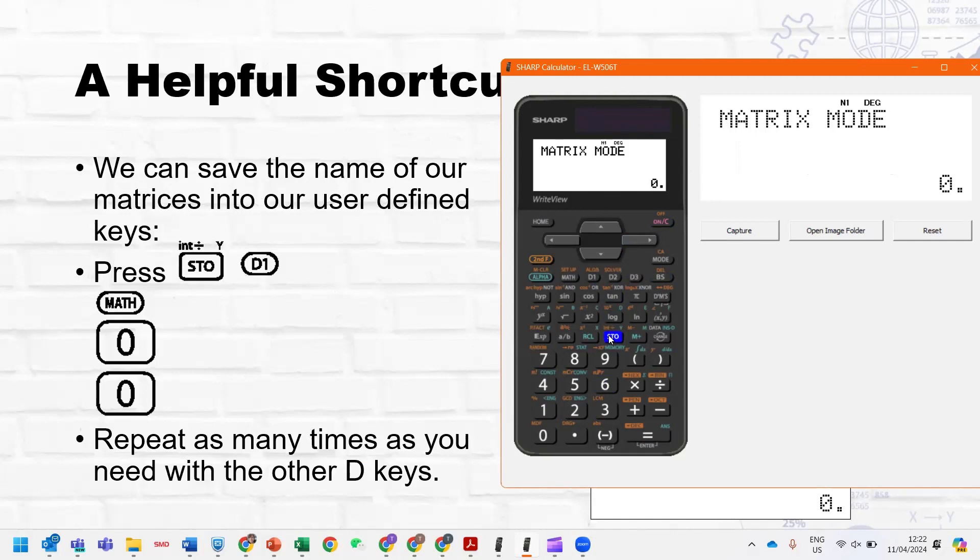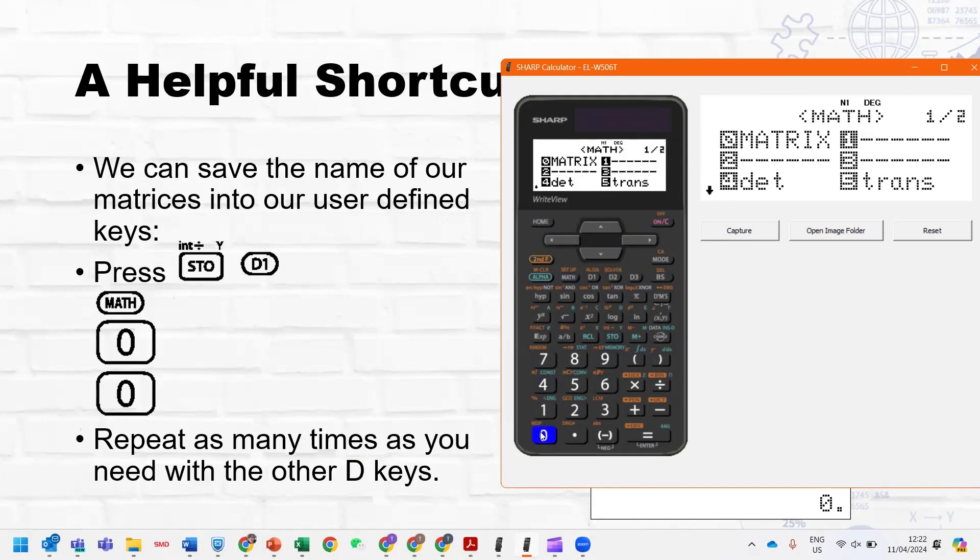So when you're working, we spend a lot of time working with matrices, then you can store into D1 the name of the matrix that you're going to work with. I'll do it for D2 as well, so I'll store into D2, and I'll store the name of matrix B.